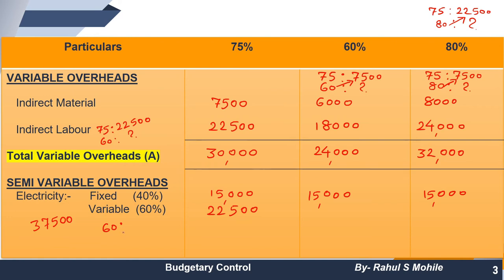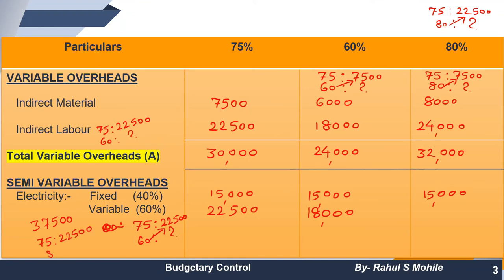For the variable portion of electricity: at 75% capacity it is 22,500. Cross multiply for 60% capacity — you get 18,000. Cross multiply for 80% capacity — 75% gives 22,500, so 80% gives 24,000. So electricity totals are: fixed 15,000 plus variable amounts for each capacity level.